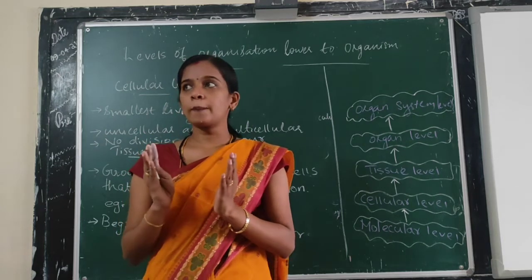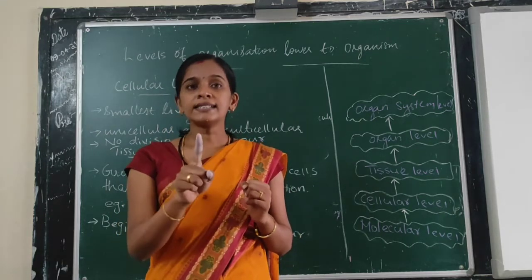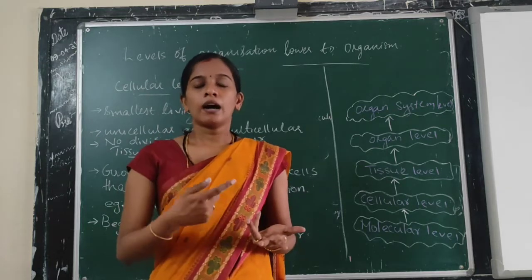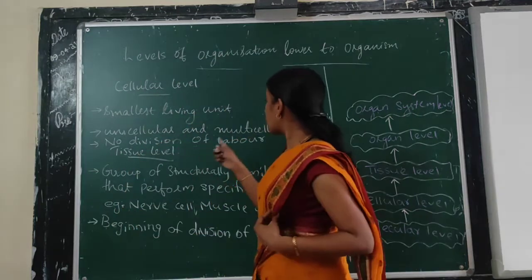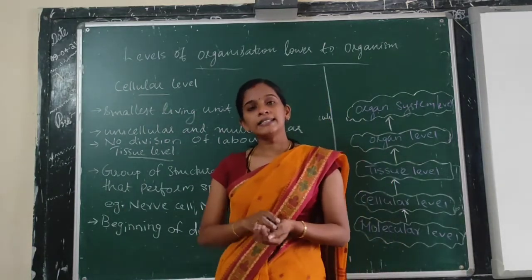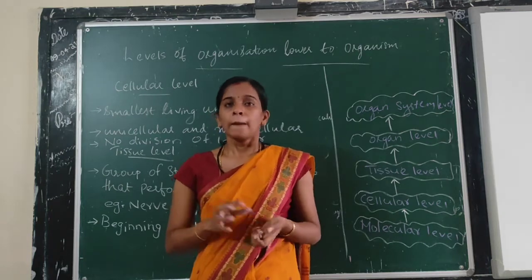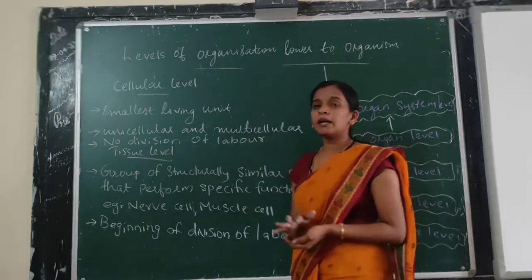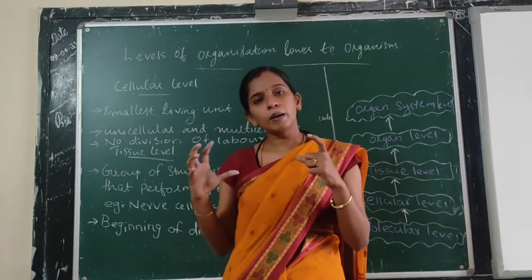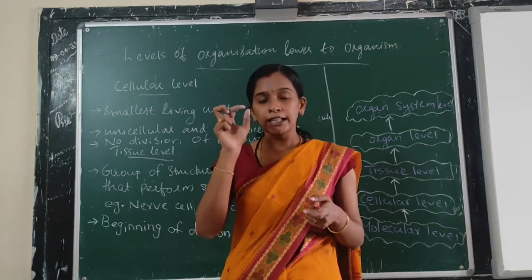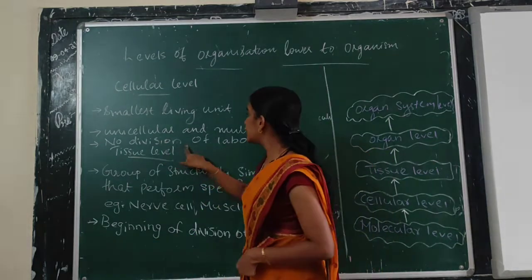In unicellular organisms — for example, amoeba, paramecium — there is only one cell, so all life activities are carried out by that one cell only. In simple multicellular organisms, there are more than one cell and they form a group, but these simple multicellular organisms show cellular level of organization — the cells do not perform a specific function together but function independently.